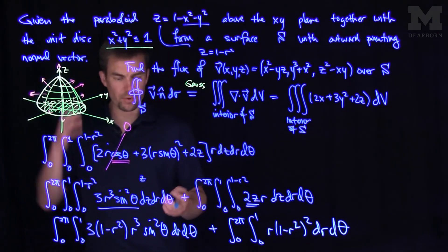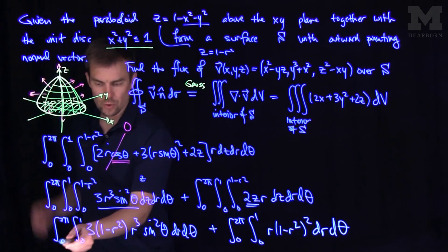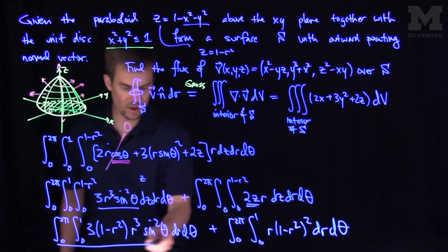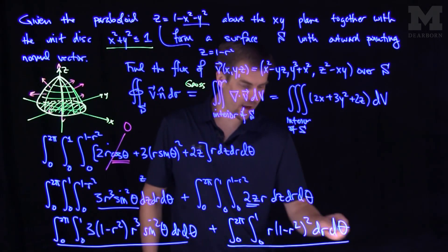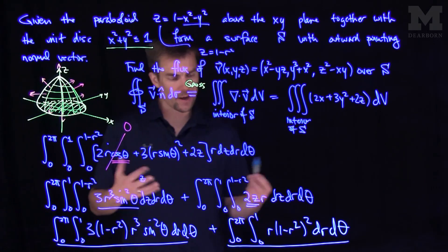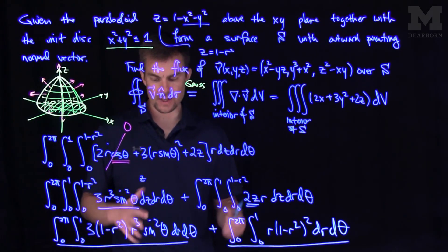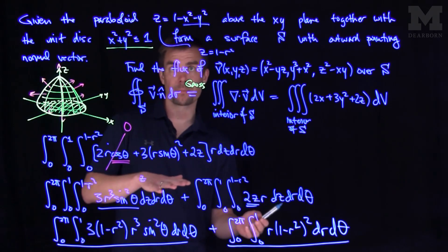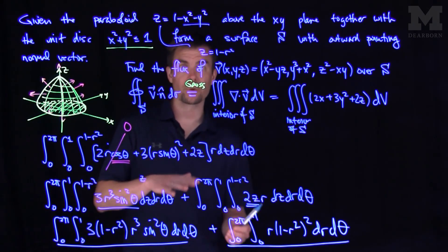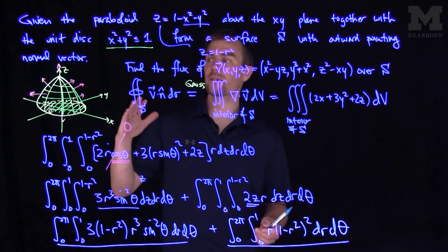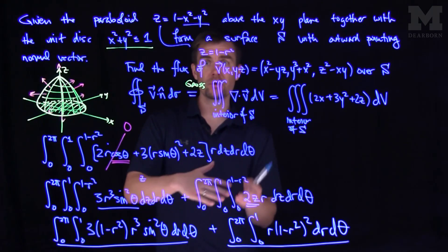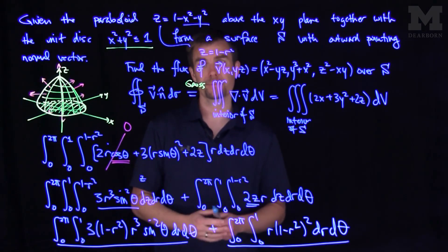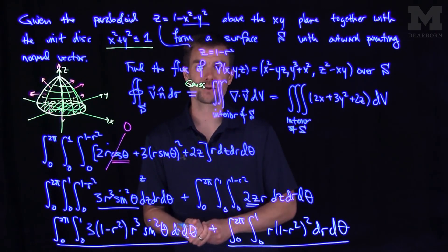We've now reduced the problem to doing two double integrals over a rectangle, and we'll leave the rest as an exercise. This simplifies the process considerably — we don't have to find the outward-pointing normal vector, and we just have two double integrals to do. Thank you very much.